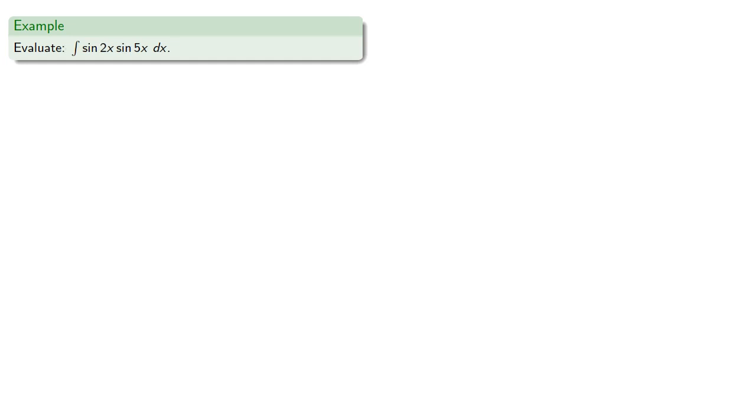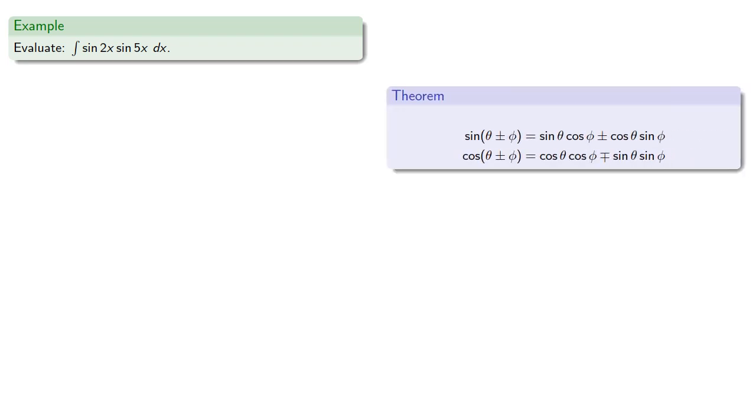And for our product of sines, again, we have our angle sum formulas and our product of sines appears in the expansion of cos(2x + 5x) and cos(2x - 5x).